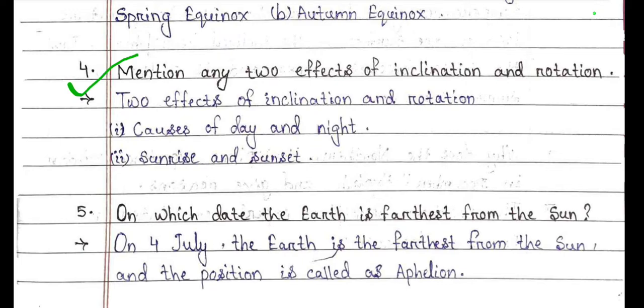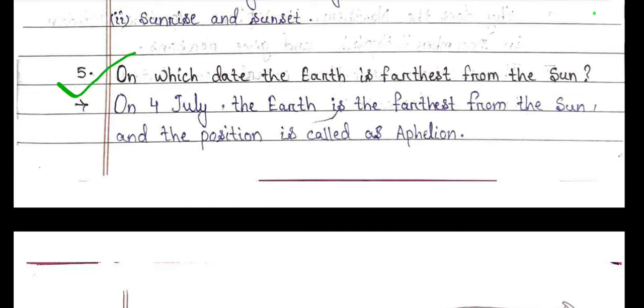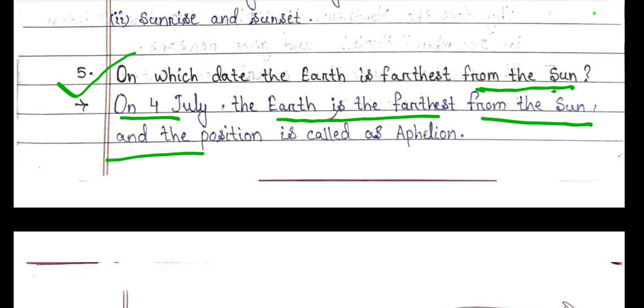Question number 4: Mention any two effects of inclination and rotation. Two effects are: causes of day and night, and sunrise and sunset. Question number 5: On which date is the Earth farthest from the Sun? On 4 July, the Earth is farthest from the Sun and the position is called Aphelion.